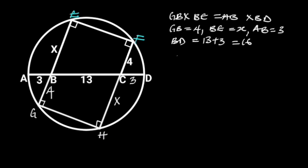Substituting these values in the formula will give us 4 times X is equal to 3 times 16. Next, let's divide through by 4. On the left side, 4 will cancel out 4. And on the right side, 16 divided by 4 is 4.